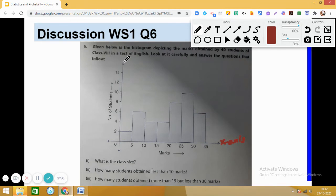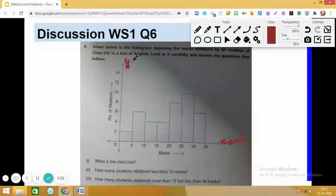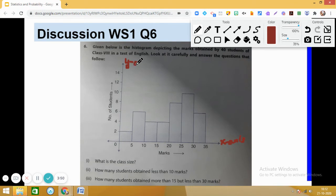Similarly, on the y-axis, the number of students are mentioned. In the interval 0 to 5, can you tell me how many students are there? Yes, in 0 to 5 the number of students is 2, and from 5 to 10 it depicts 6 students.